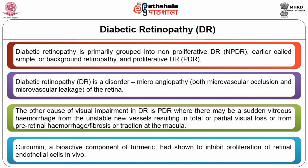Diabetic retinopathy is grouped into non-proliferative diabetic retinopathy (NPDR), formerly called simple or background retinopathy, and proliferative diabetic retinopathy (PDR). It is a microangiopathy involving both microvascular occlusion and leakage in the retina. Proliferative retinopathy may cause sudden vitreous hemorrhage from unstable new vessels, leading to total or partial visual loss, or from pre-retinal hemorrhage, fibrosis, or traction at the macula. Curcumin, the bioactive component of turmeric, has been shown to inhibit proliferation of retinal endothelial cells in vivo.